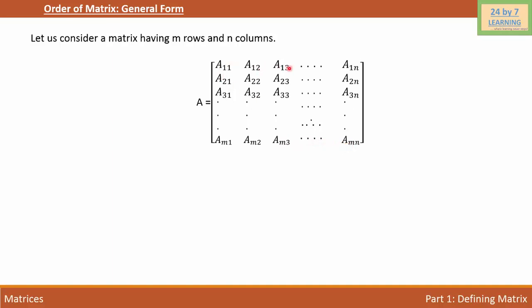So we have 1, 2, 3, all the way to M rows. So the total number of rows for this matrix is M.